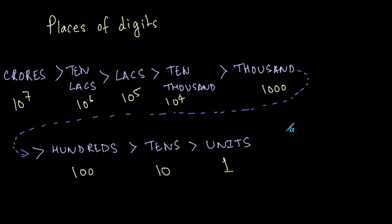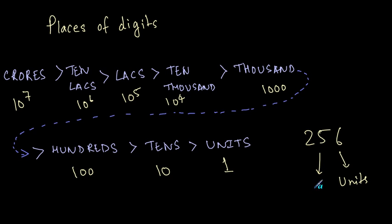Let's take an example. If we have the number 256, then 6 is in the units place, 5 is in the tens place, and 2 is in the hundreds place. So from right to left, the places of digits are units, tens, hundreds, thousands, ten-thousands, and so on.